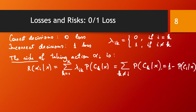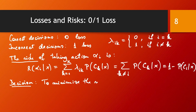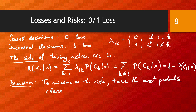So the risk of taking action alpha_i is simply 1 minus the probability of outputting the correct class c_i. To minimize the risk, we simply take the most probable class — the one with the highest posterior probability P(c | x). In this course, we will always assume this 0-1 loss situation where all losses are equal, which simplifies our reasoning and formulations.